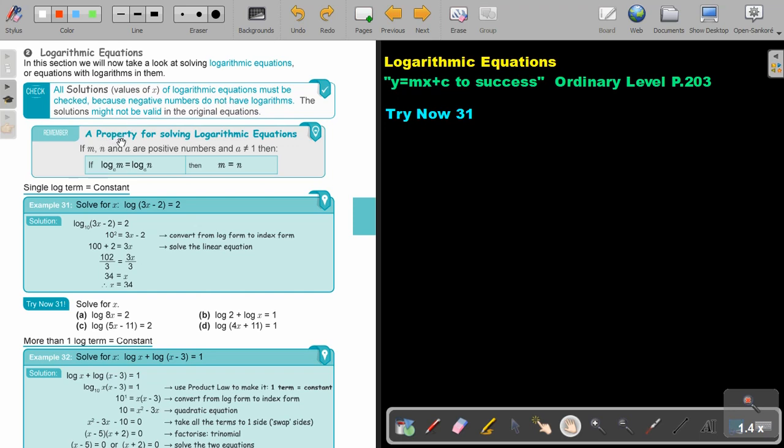It's actually the reverse of what we did in a previous video. A property for solving logarithmic equations is if I have one term equals one term and there's a log and there's a log, I can take the logs away and just equate M equals M.